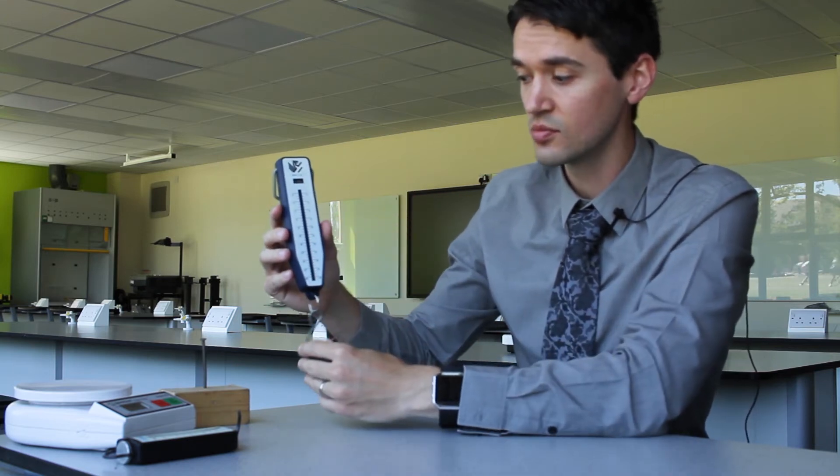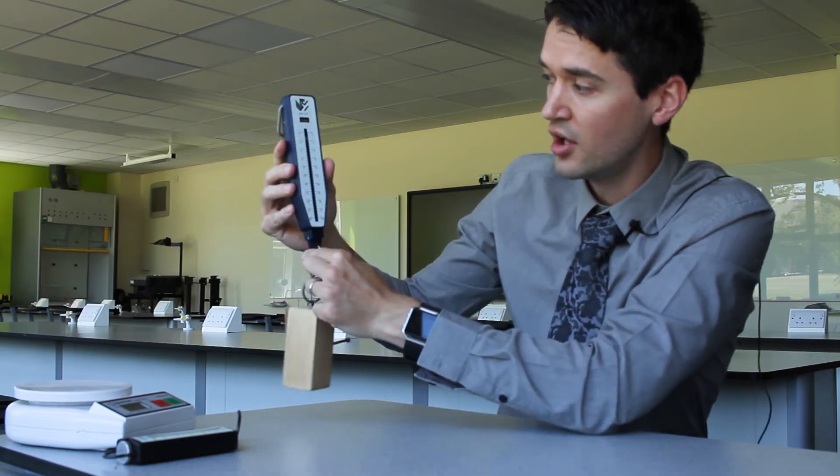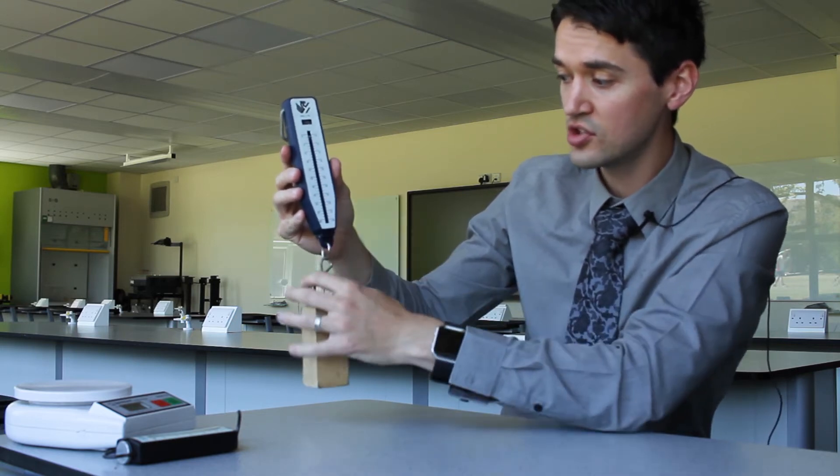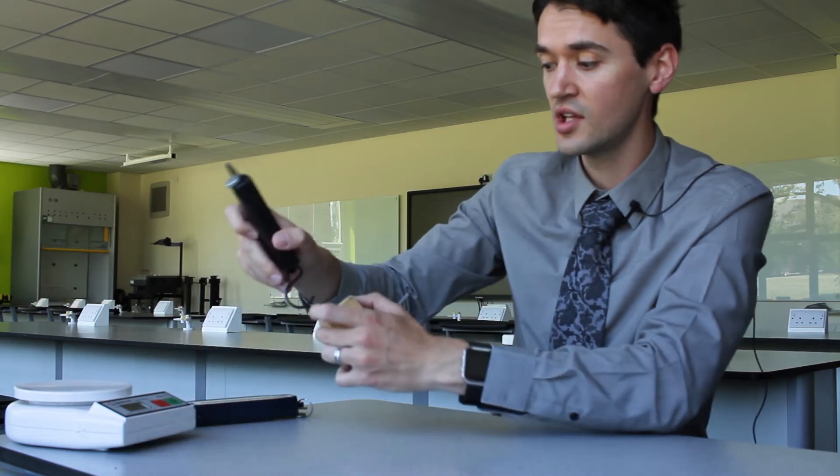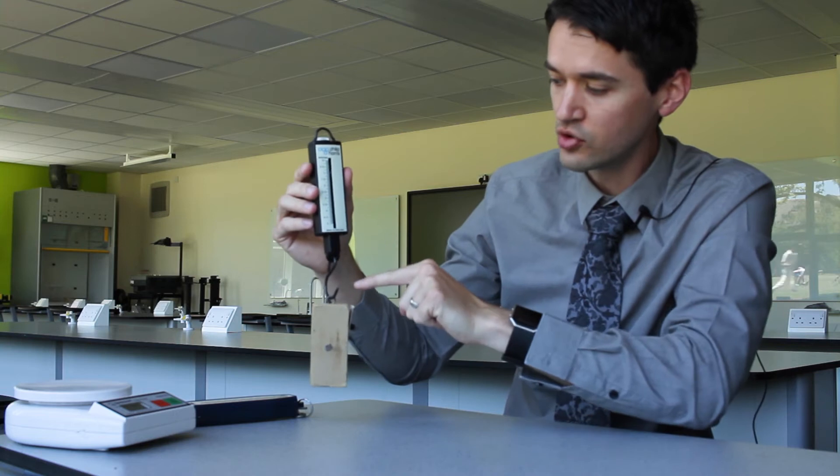So if I hang something on the end of here now, I will be able to find how much this pulls down by how much force it exerts on that object. This one goes up to 30 newtons, doesn't pull it too much. They actually probably need a more sensitive newton meter here. So this is telling me that this has actually got a force of one newton.